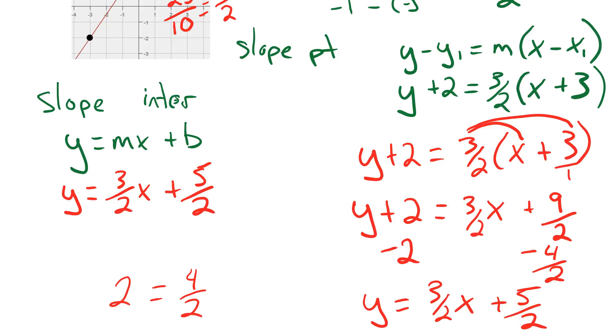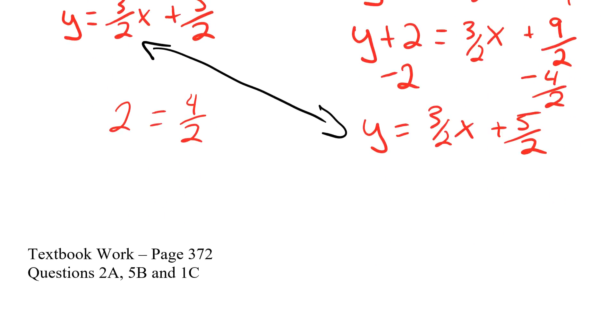And if you notice, that's the same equation whichever way I do it. On a test, on an exam, on an assignment, we will either say, go from the slope point to slope intercept, or go from the slope intercept from a graph. Either way, it gets you in the same position. Let's go to our textbook now. Let's work on page 372. 2 from the A's, 5 from the B's, 1 from the C's.